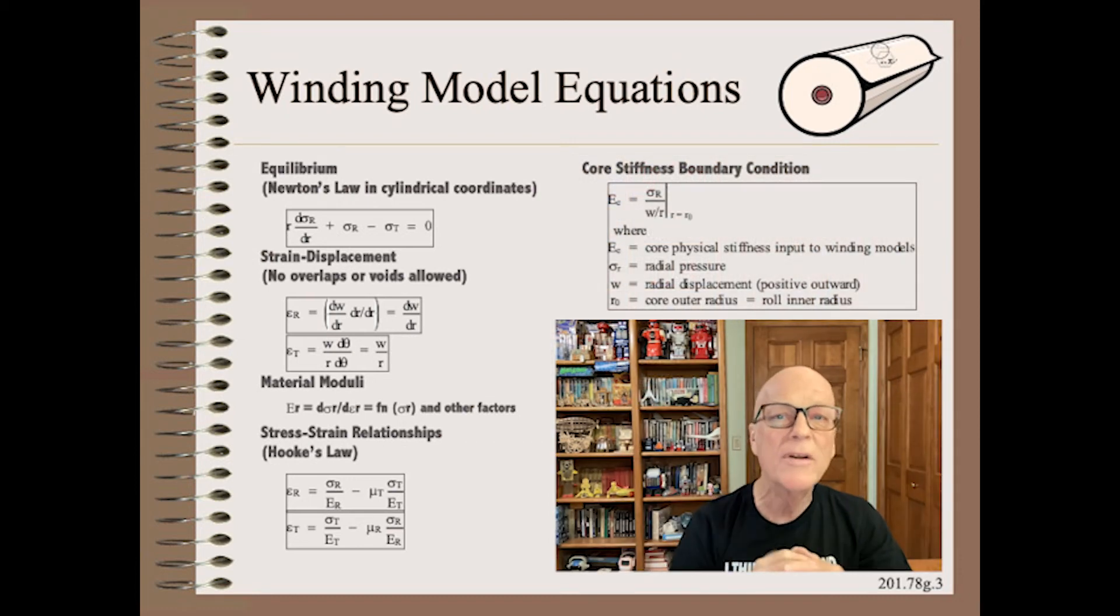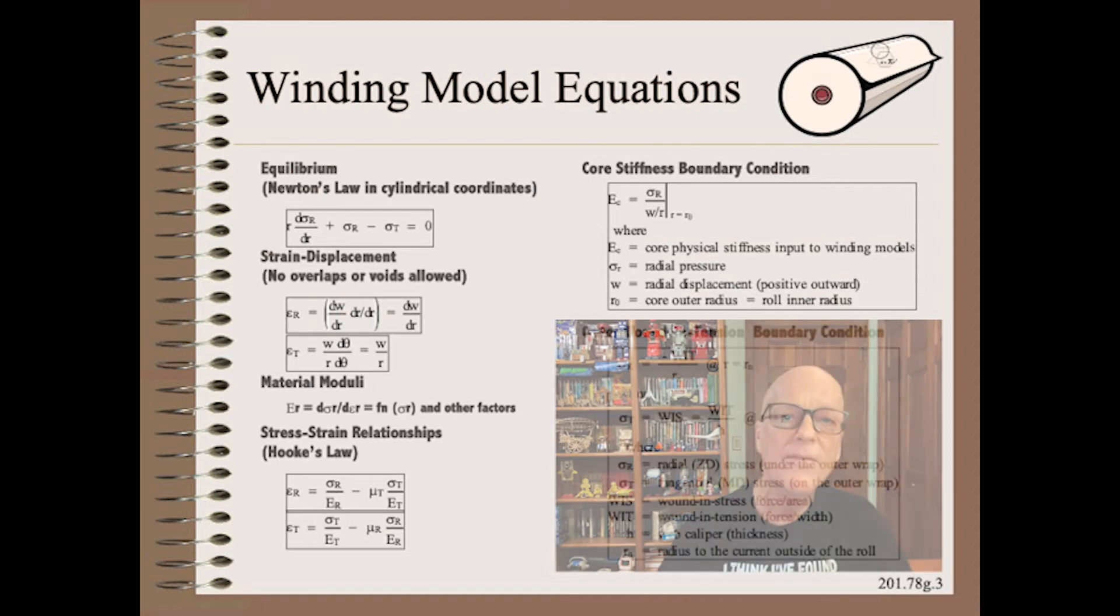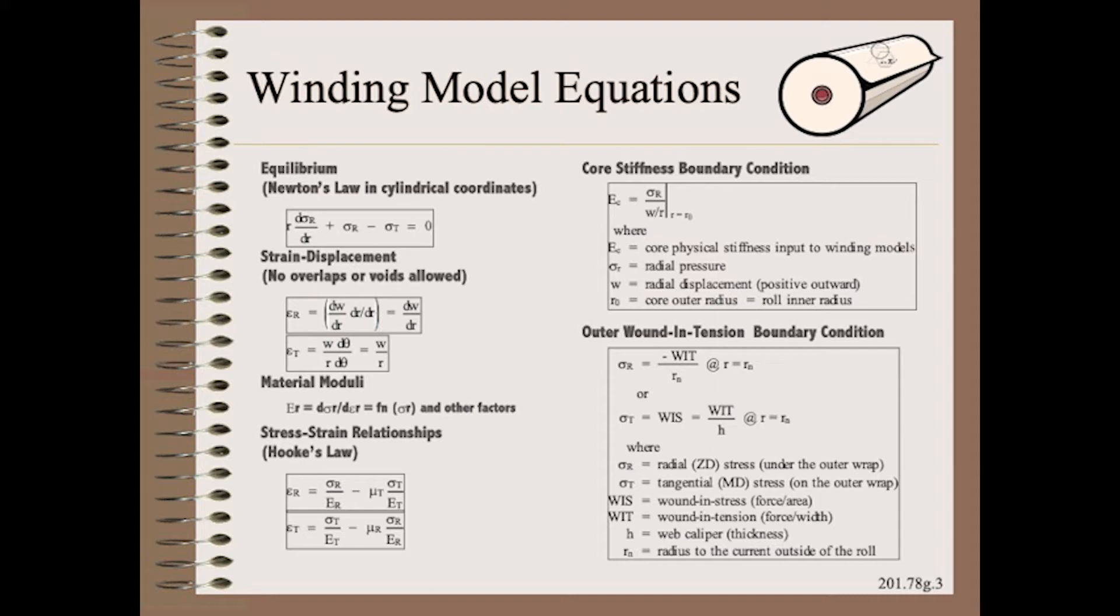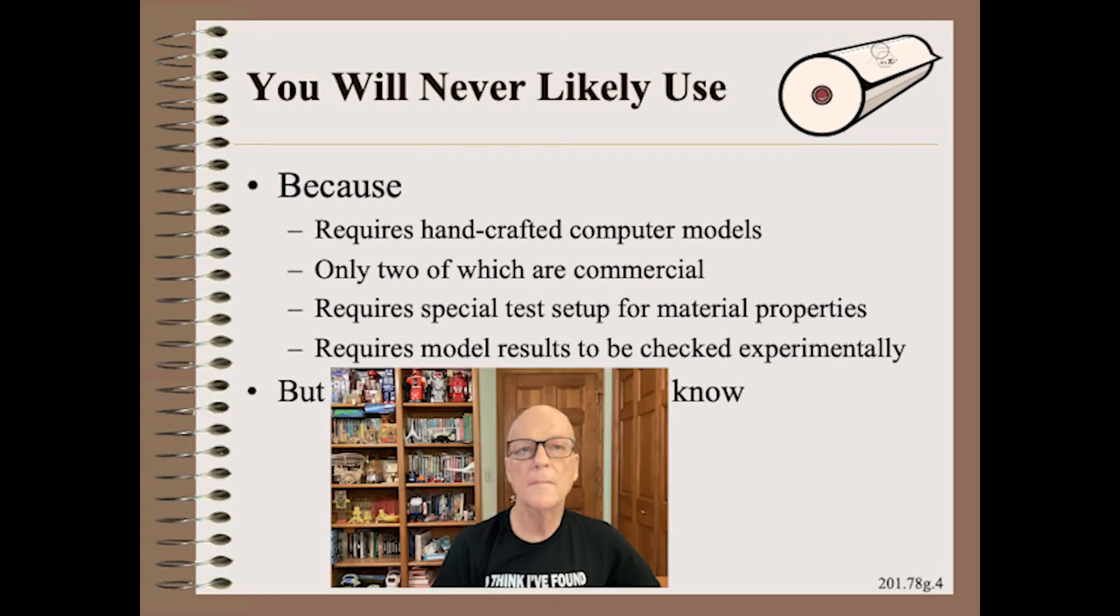The first of two boundary conditions at the core is not terribly influential because most cores are so much stiffer than the wound roll that they act infinitely stiff. The second of the two boundary conditions at the current outer wrap is super important - that is, how tight are you winding? This is a complicated combination of the net result of tension, nip, torque, and speed. In science terms, this is wound in tension. But in layman's terms, it is simply tightness.